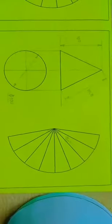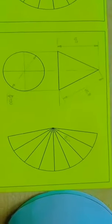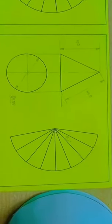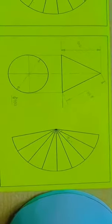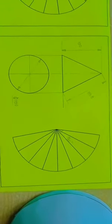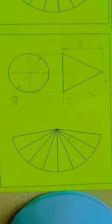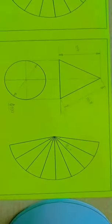First, let us see the initial position of the cone. If the cone is placed on the ground, we can see the top view as a circle and the front view as a triangle, as shown in the figure below.